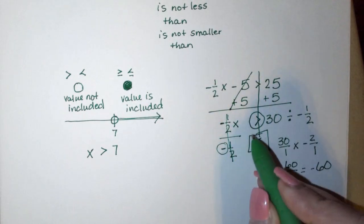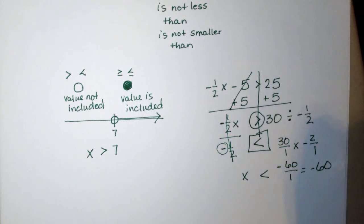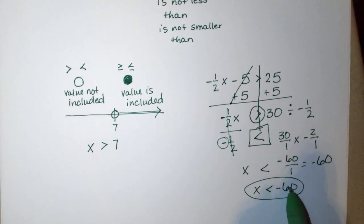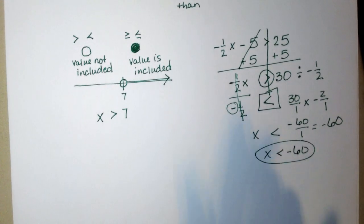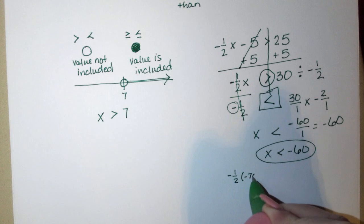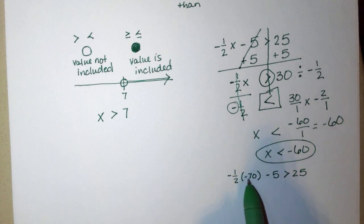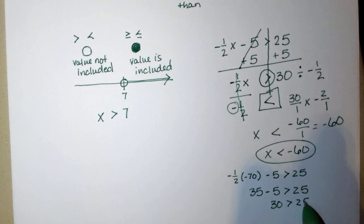So my inequality now states x is less than negative 60. And now I'm going to see if that is true. I take any number less than negative 60. So I'm just going to use negative 70. Now I've got to be careful here. Some of you were thinking maybe negative 50. But negative 70 would be less than negative 60. So I'm going to plug that in. Negative 1 half times negative 70 minus 5 will be greater than 25. Negative and a negative gives me a positive. Half of 70 is 35. So I get positive 35. Minus 5 would give me 30, and 30 is greater than 25. So looks like my solution is correct.